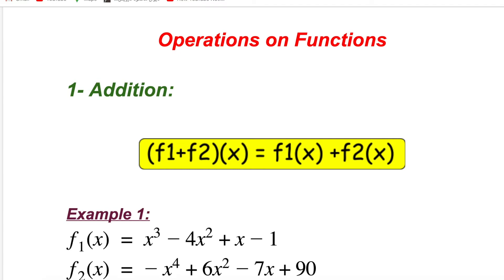If I have two functions and I want to add both functions, I just need to add both equations that represent the functions. If there are like terms, I just need to combine them. If there are fractions, I just need to add them. The formula for addition is (f1 + f2)(x) = f1(x) + f2(x).